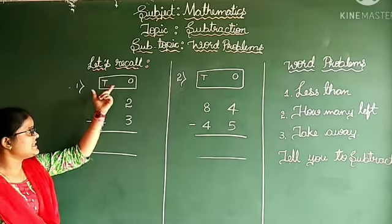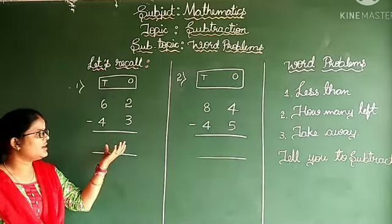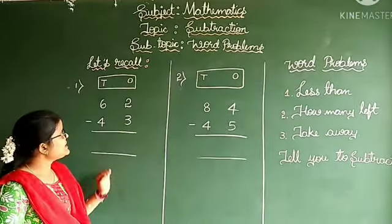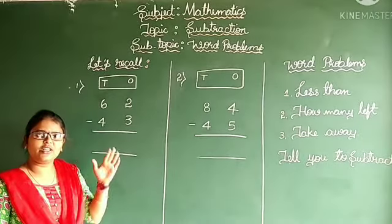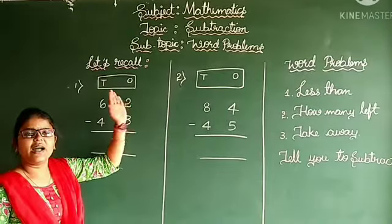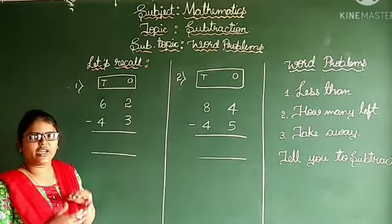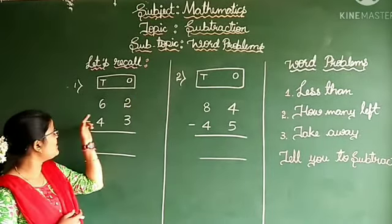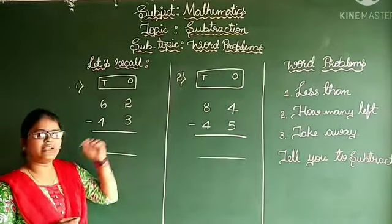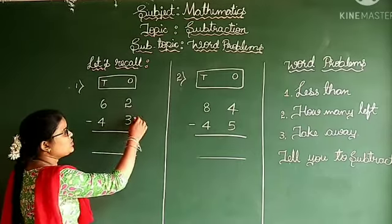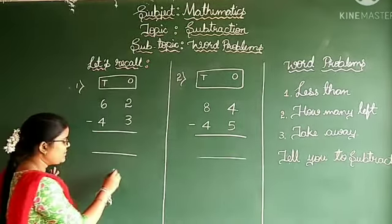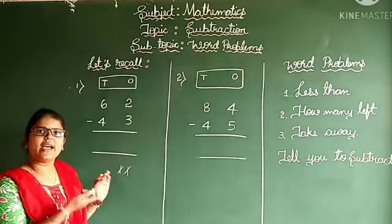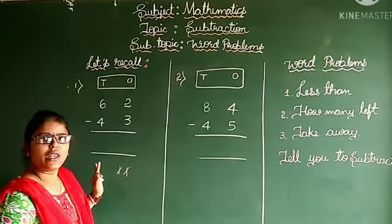See, like this, problems will be given in your question paper or in your textbook. Whenever we do subtraction or addition, first we have to calculate the 1s part and next the 10s part. In the 1s part, 2 minus 3 — you keep 2 lines and try to strike out 3 lines, but there is no third line. Therefore this method is not applicable.